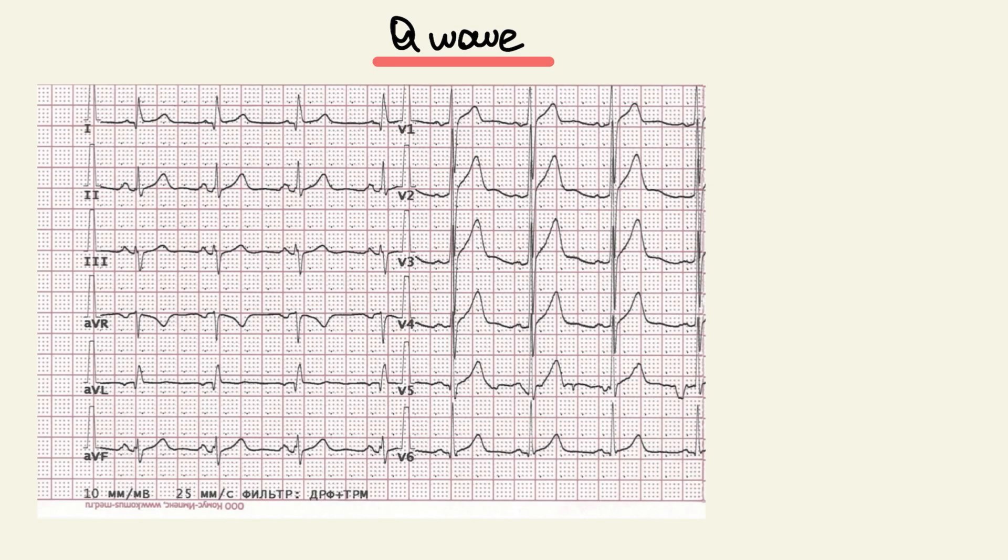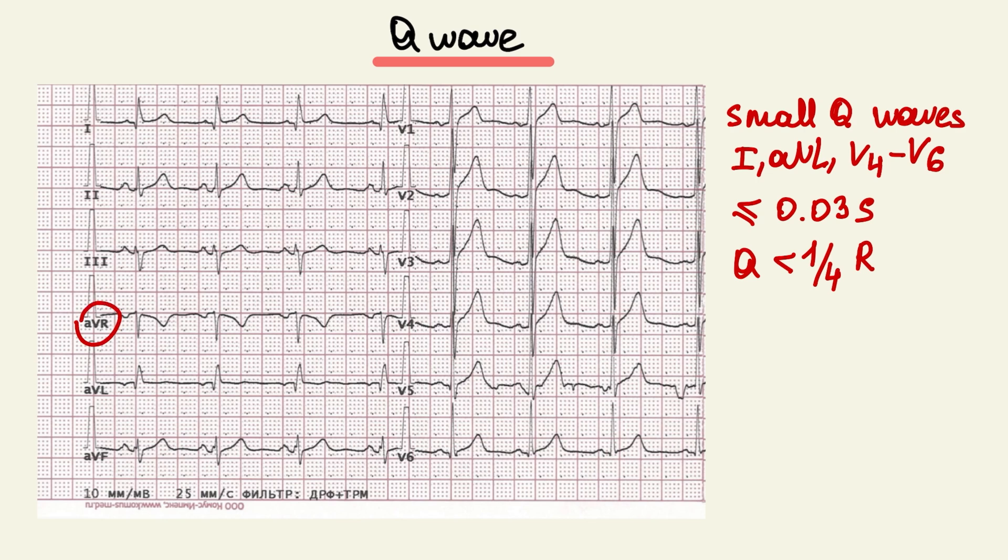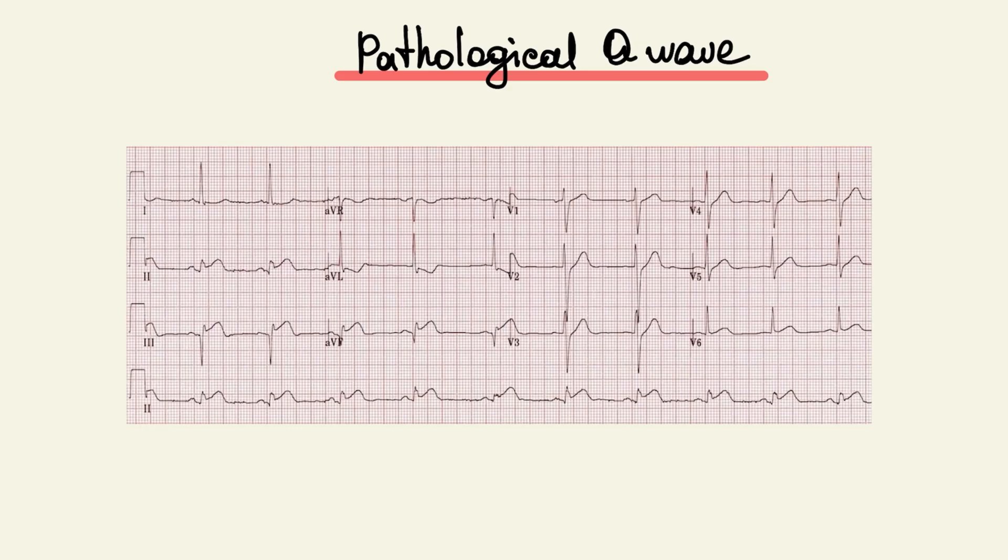Q wave represents septal depolarization. And we can see small Q waves at lead 1, AVL and from V4 to V6 as a result of initial septal depolarization. Normal duration is less than or equal to 0.03 seconds. Q wave can be less than one quarter of R wave. At lead AVR we can see QS complex and it is normal. If you see a pathological Q wave, it tells us about infarction.